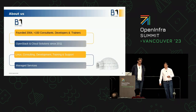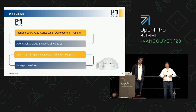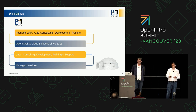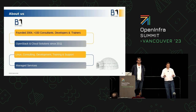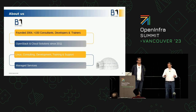B1 Systems is a consulting company, mainly active in the DACH region — that means Germany, Austria, and Switzerland — but we're also doing international projects. It has been founded in 2004. We have around 150 employees, which are mostly developers, trainers, and consultants. We started with Linux consulting, doing consulting, development, training, and support.